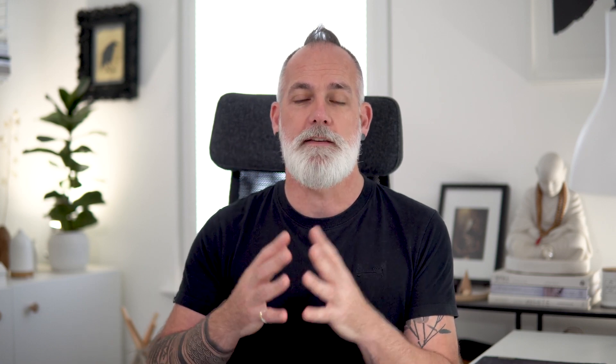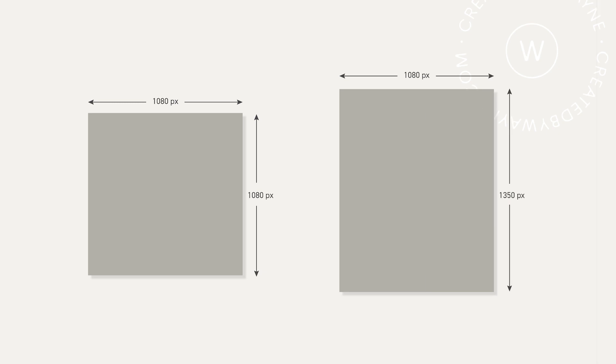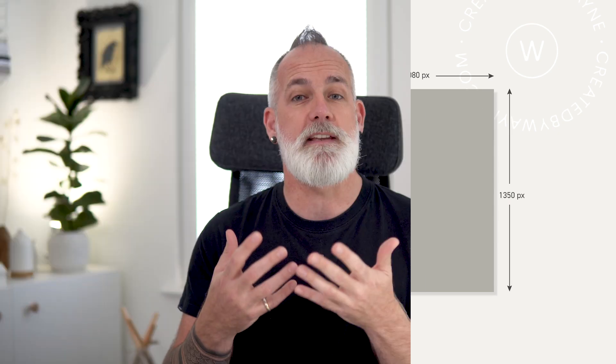But not so long ago, Instagram gave us the option to post vertical posts — taller than they are wide. The size for those is 1080 pixels wide by 1350 pixels high. There are a couple of reasons for using that size for your posts and carousels. First of all, it takes up more of the screen real estate, which gives you more space to work with.